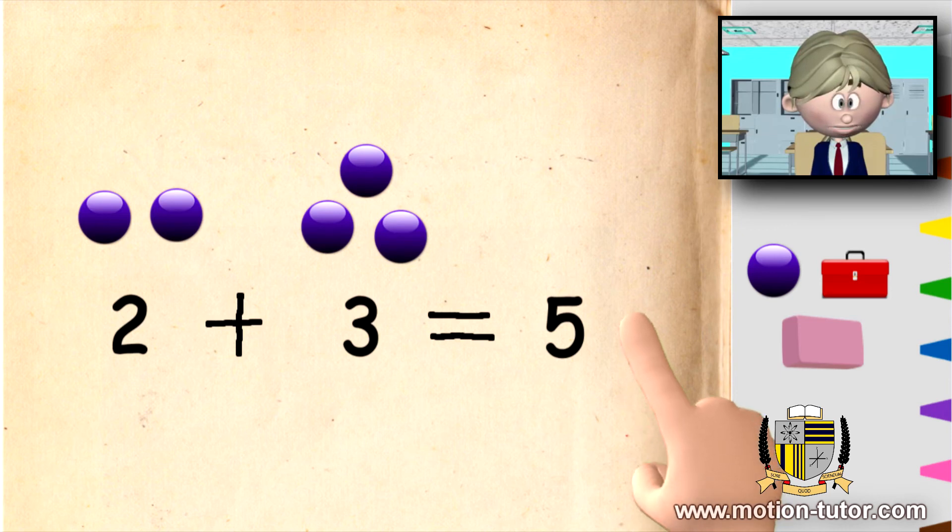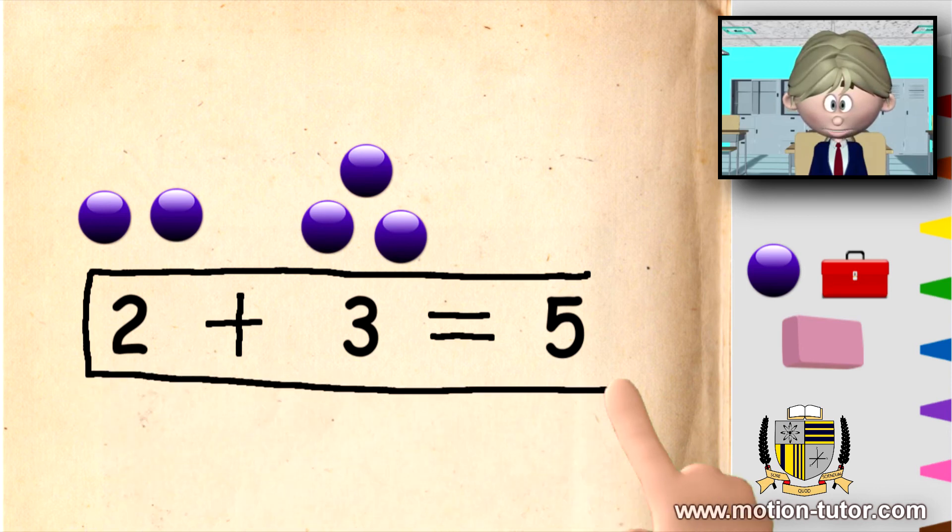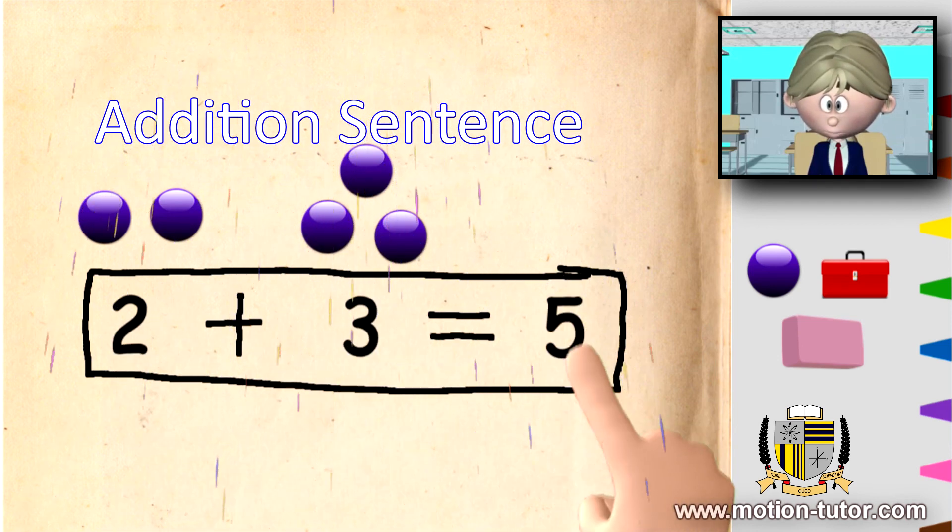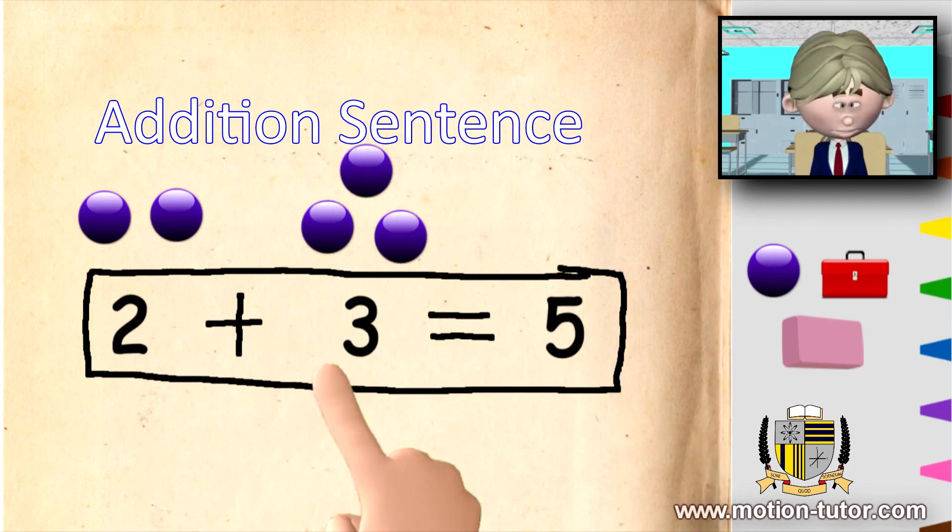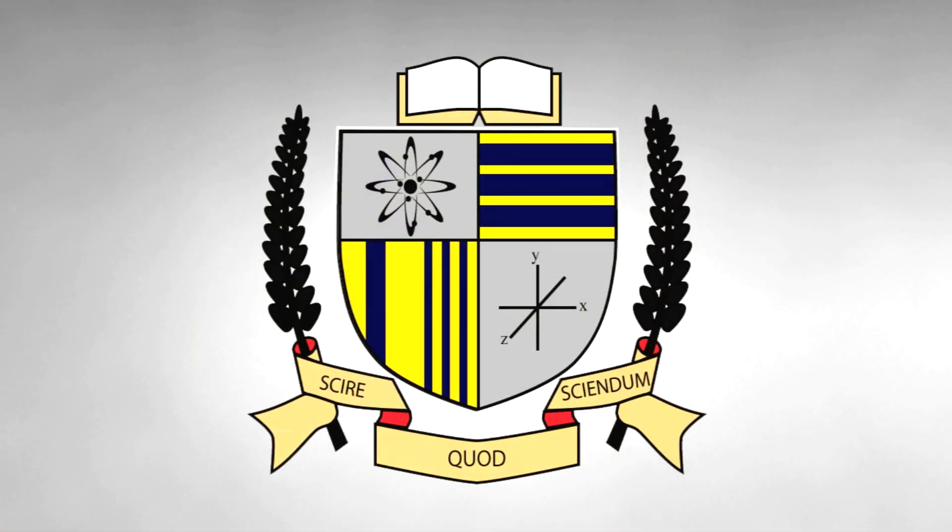And this whole thing is called the addition sentence. This whole thing. This is a whole addition sentence. Two plus three is equal to five is the addition sentence.